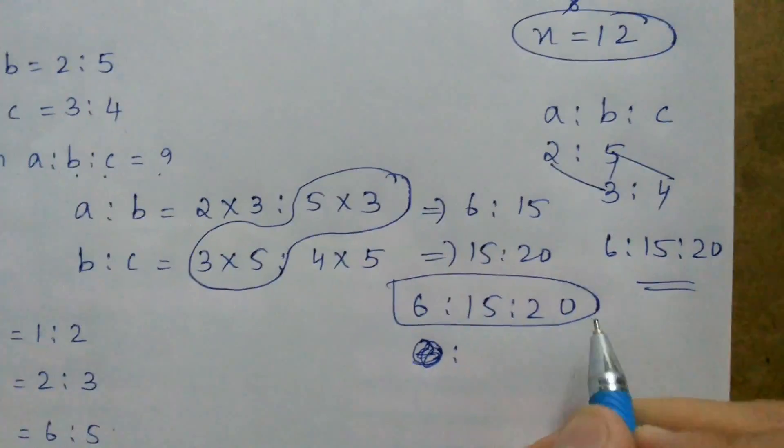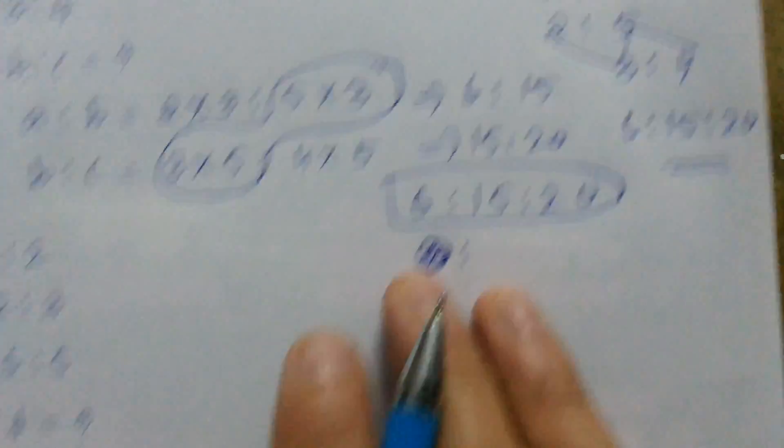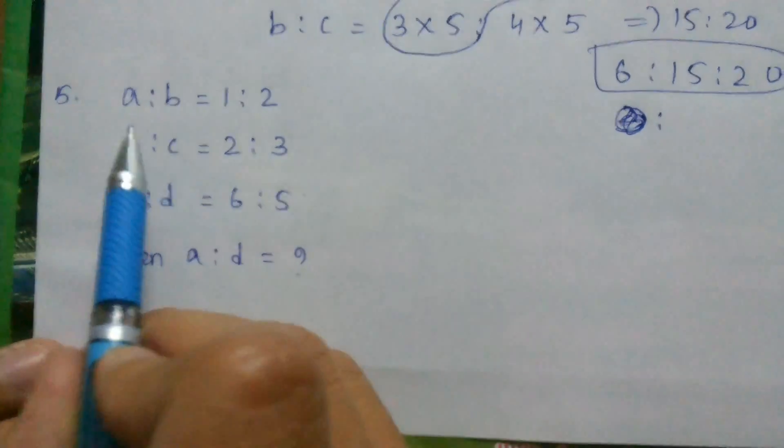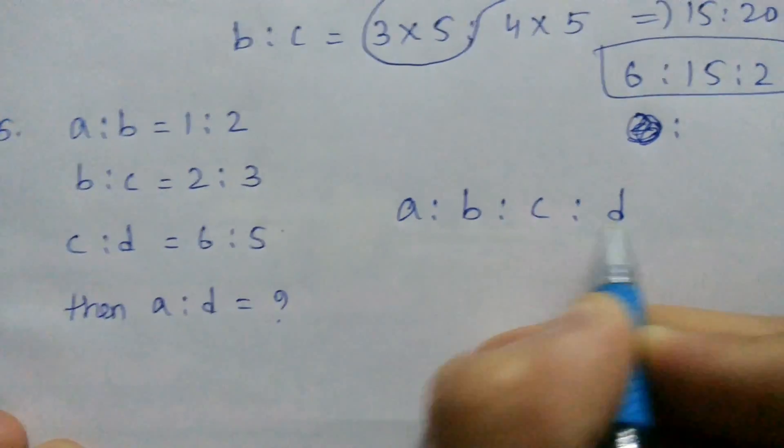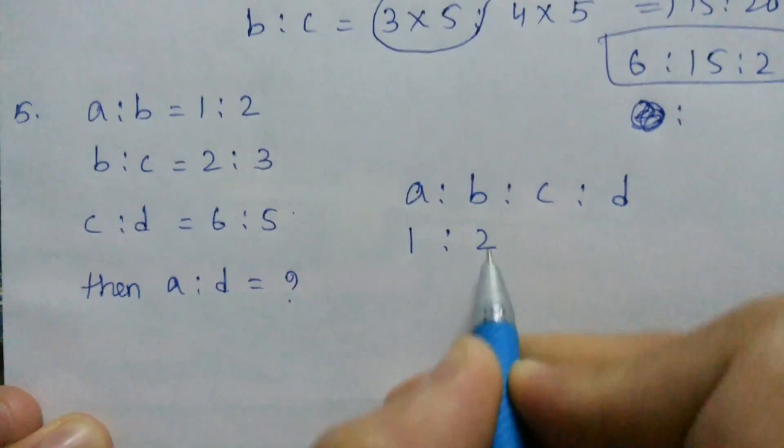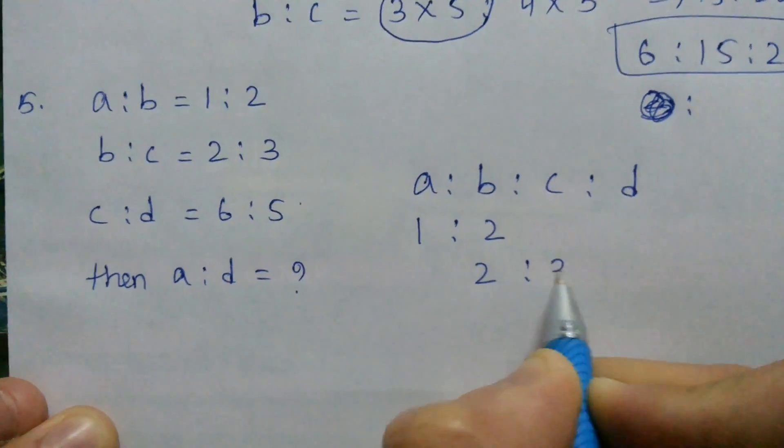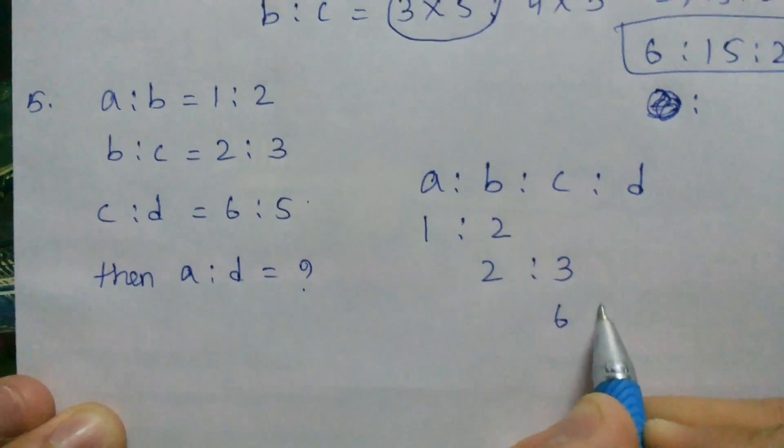So again we get the same ratio, that is 6 is to 15 is to 20. Now let us see this last problem. A is to B is 1 is to 2. Let us use the same method. A is to B is to C is to D. A is to B is 1 is to 2. B is to C is 2 is to 3 and C is to D is 6 is to 5.